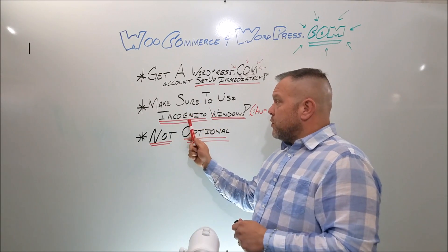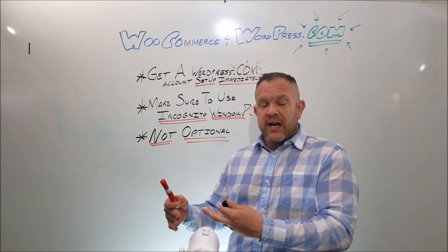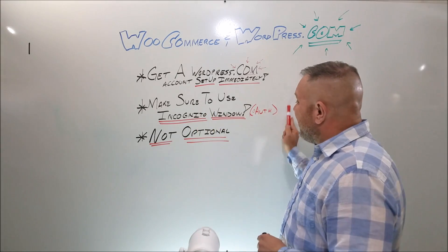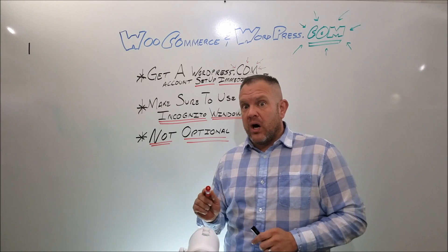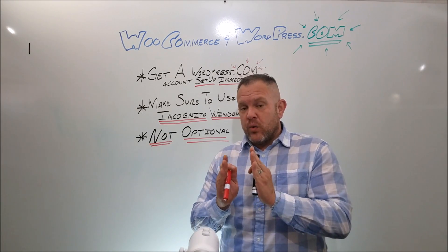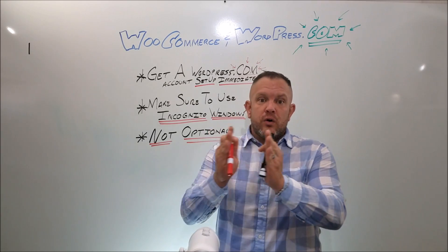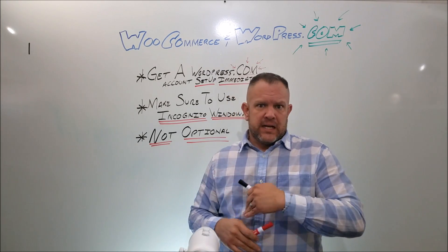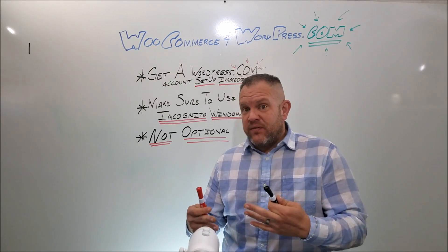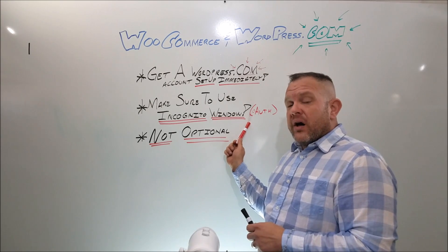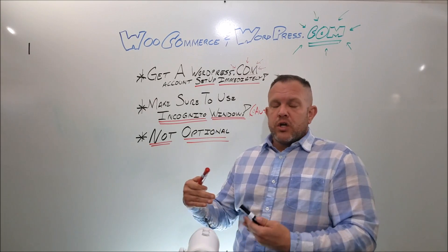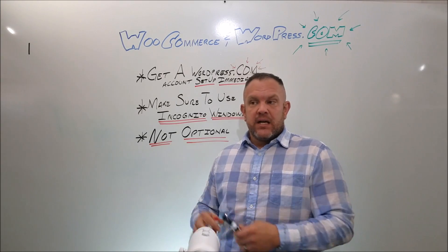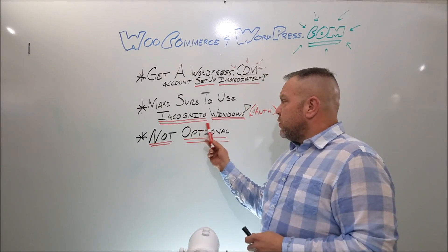Make sure to use an incognito window when you're managing, looking at, fixing, or trying to help somebody else's account. Because WordPress.com uses OAuth — when you sign in, you are signed in. And when you then go to read somebody else's blog, comment, or do whatever, if you are still logged into that client's OAuth credentials with WordPress.com, you're now doing whatever as that person or that entity. So be very careful and make sure that you use an incognito window.